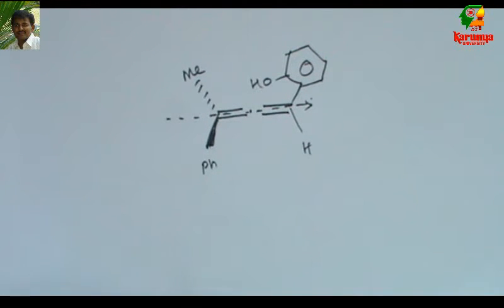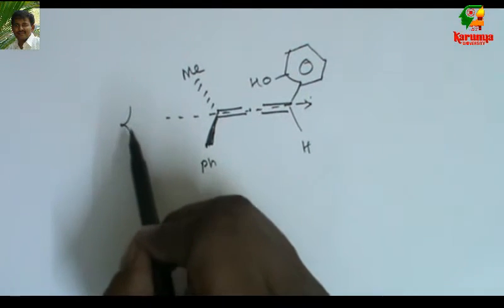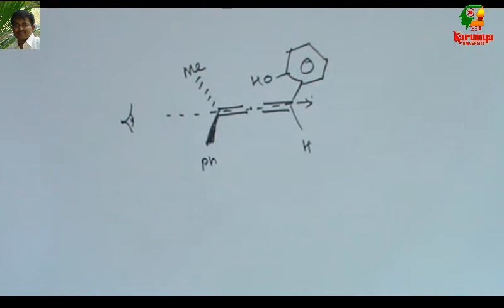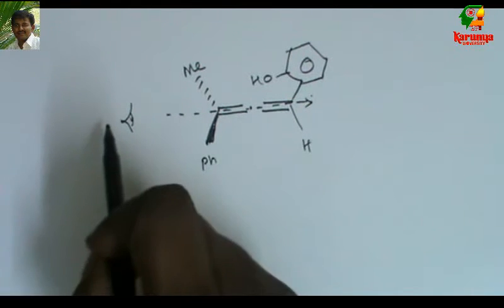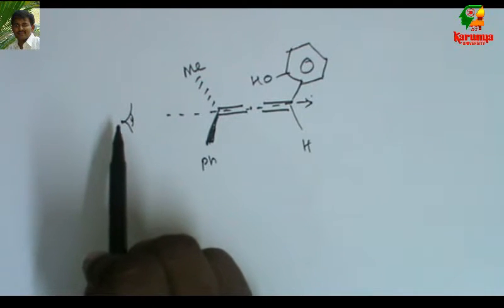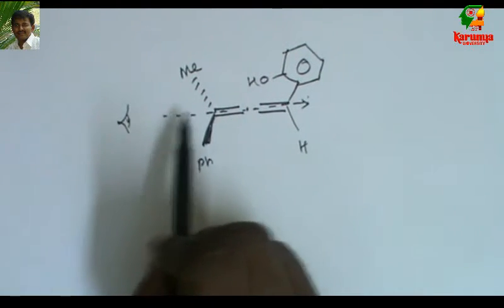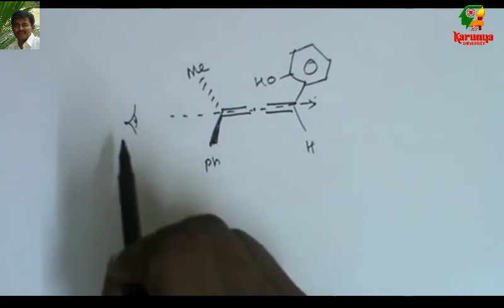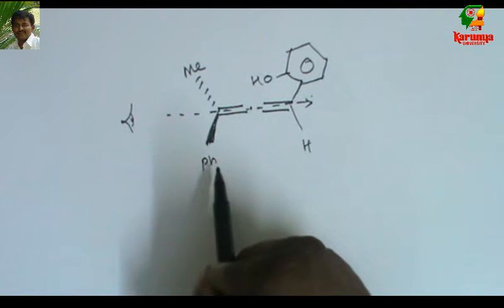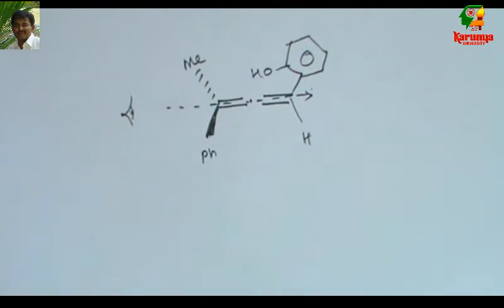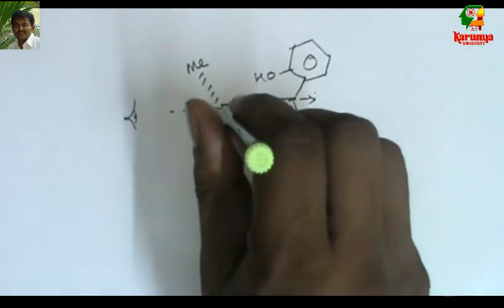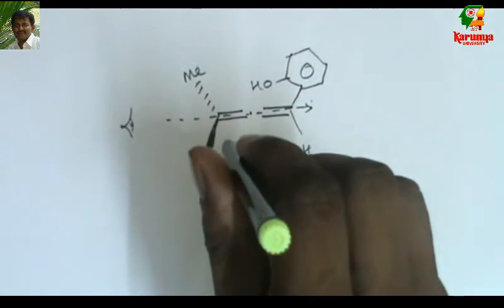Now you have to view the molecule from one side. You can view from here as well as from here and you will get the same configuration. First I try from my left-hand side — I look through the molecule along the axis. When you see like that, towards my right-hand side I can see the phenyl ring. Towards my left there will be methyl. So I view the molecule from here.